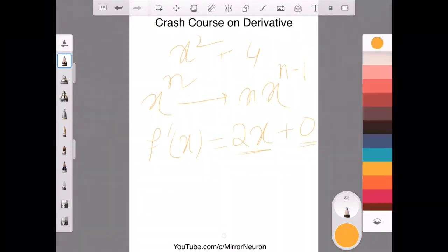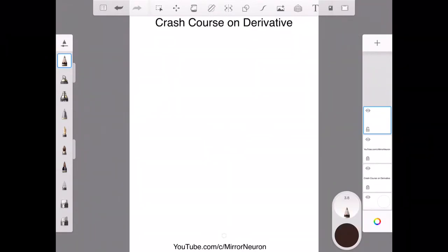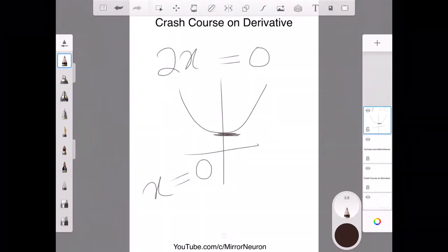Now, what I can do is, I can equate 2x equal to 0 because remember, wherever my derivative is equal to 0 and the equation of the function for my case is 2x equal to 0 and that gives me nothing but x is equal to 0.